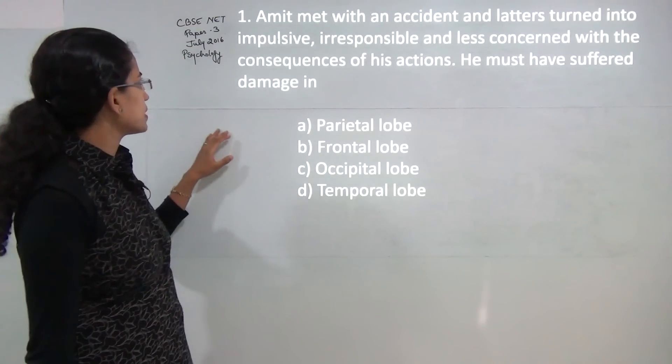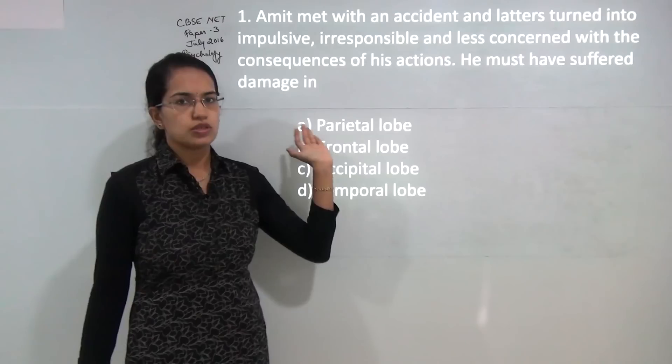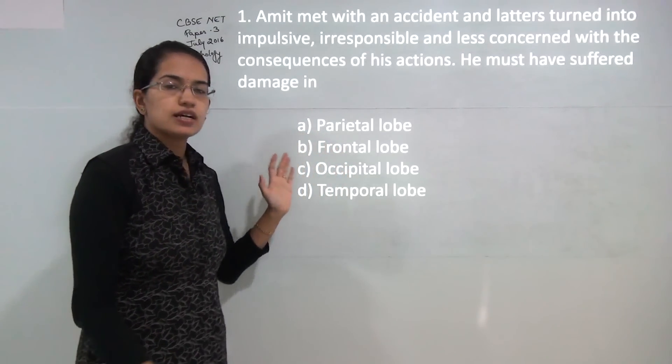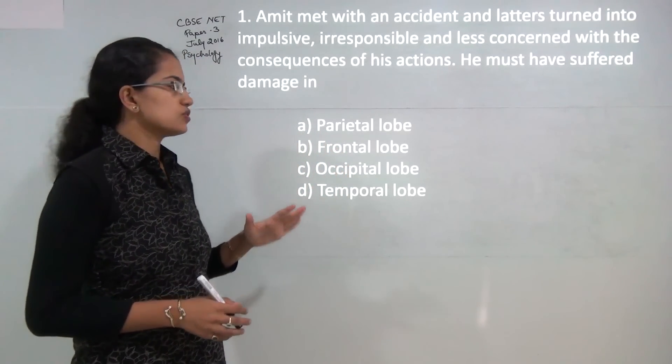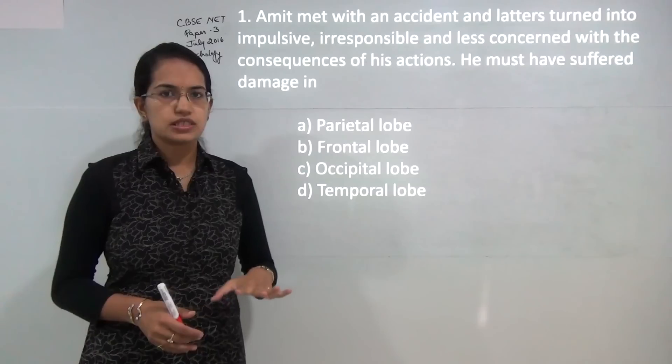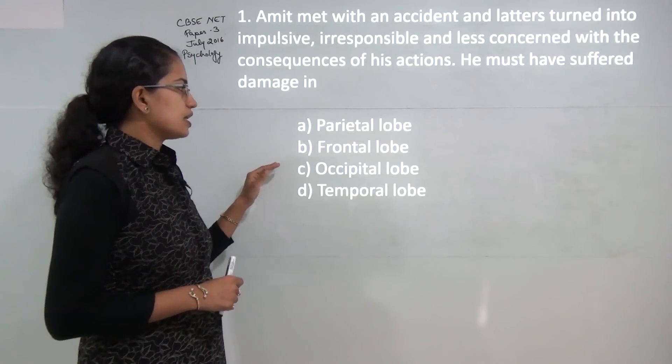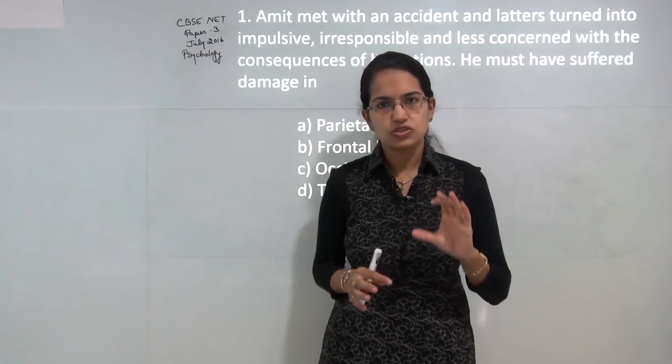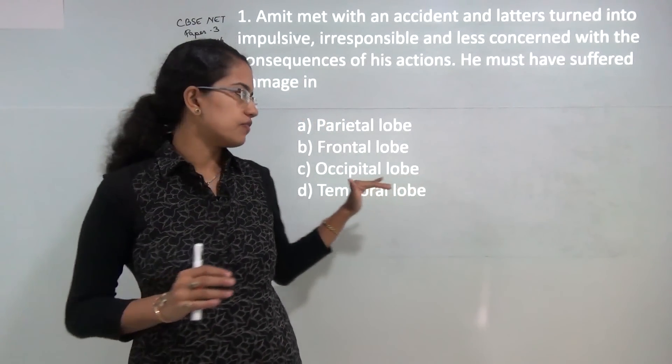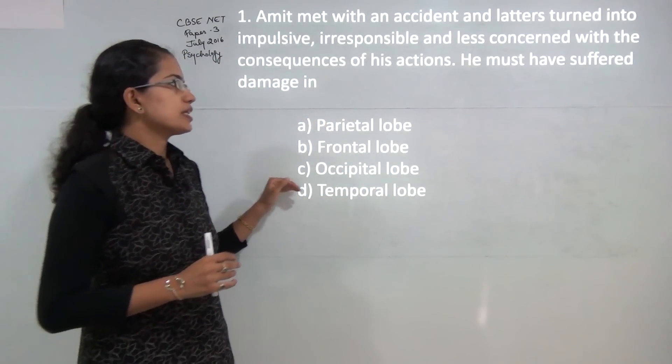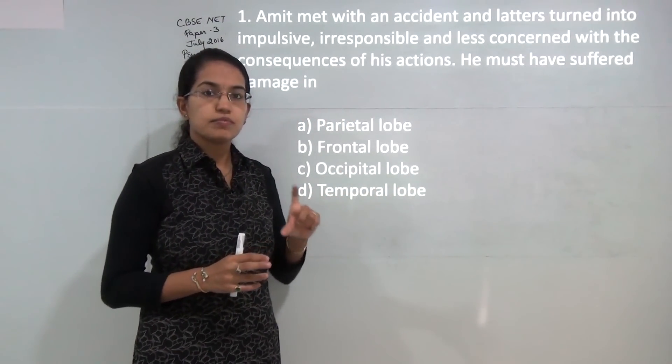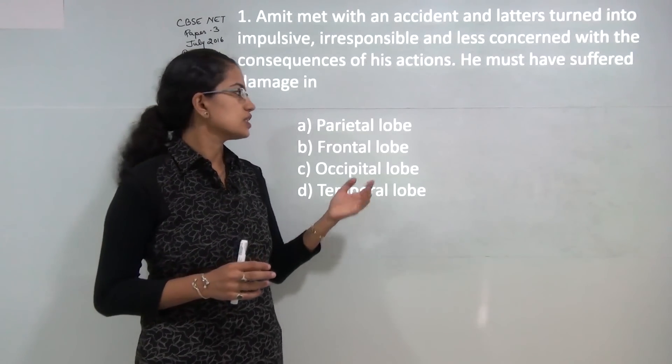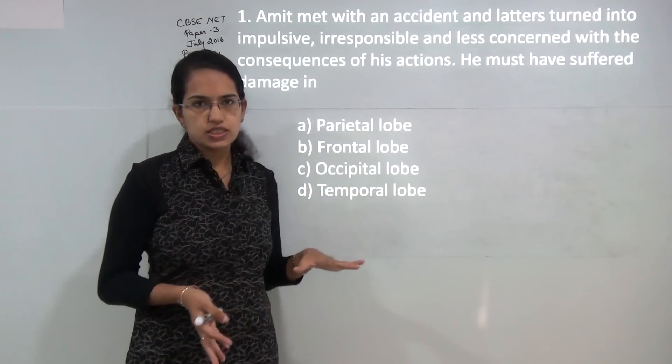In this session we will be discussing the NET Paper 3 for Psychology July 2016. Paper 3 comes with 75 questions, so we will be covering 25 questions in 3 sessions. Most of the questions were based on factual information, so it is important that you must be very familiar with the basic experiments.